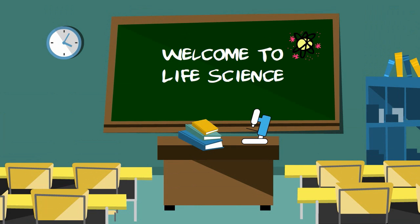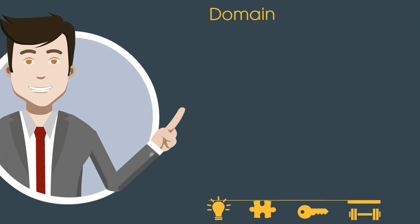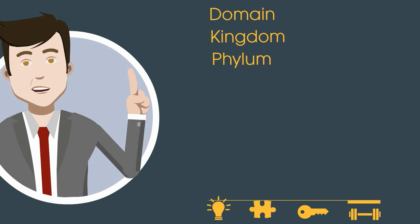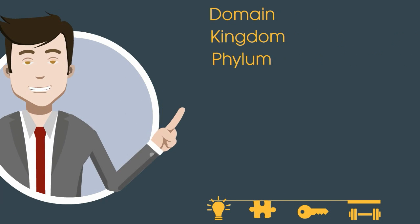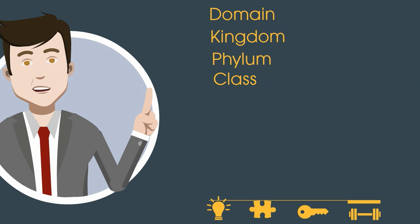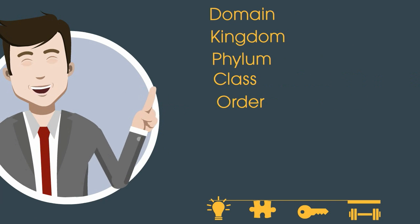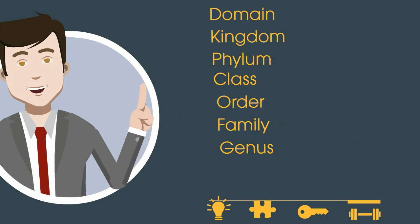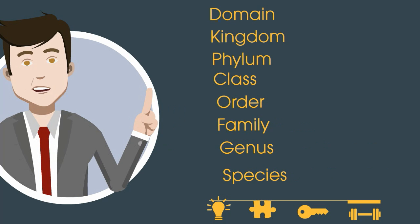The levels of classification are used to group and organize organisms. They are as follows: Domain, Kingdom, Phylum, Class, Order, Family, Genus, and Species.